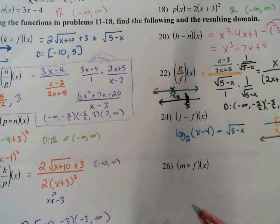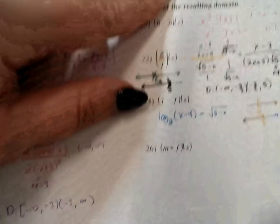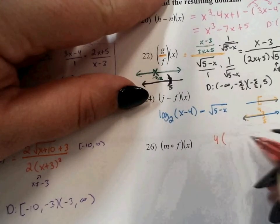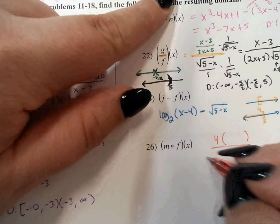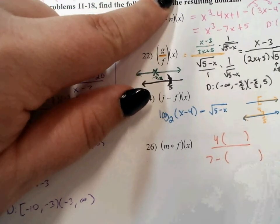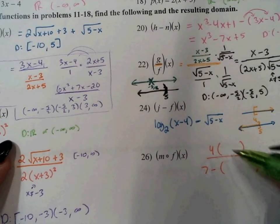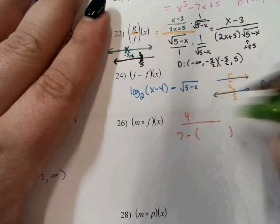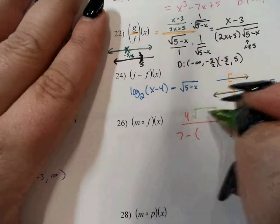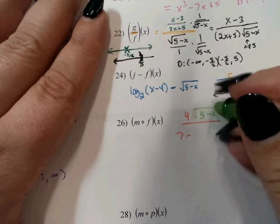Number 26: m composed of f. So m is the exterior function — 4 times something, divided by 7 minus something. What we put inside is the function f, which is the square root of 5 minus x. The square root already acts as a grouper, so I can just write: square root of 5 minus x.